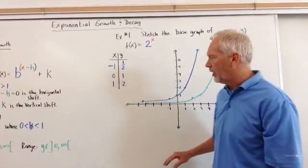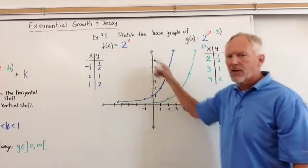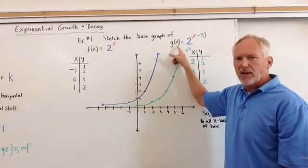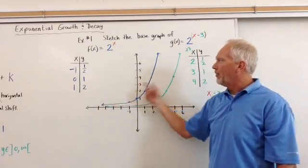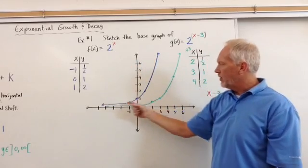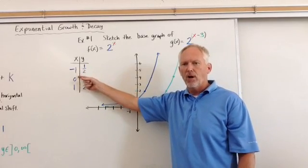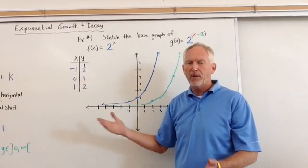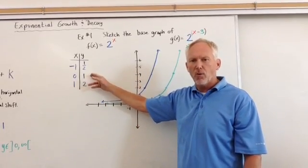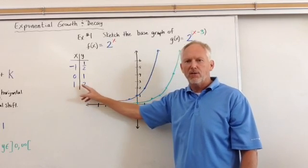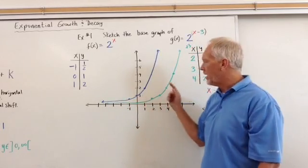Alright, so let's look at our first example here. It says sketch the base graph of f(x) equals 2 to the x and g(x) is 2 to the (x minus 3). So we first graph the f(x) in blue. So we first build an x, y chart, and I always use the same three numbers, negative 1, 0, and 1.